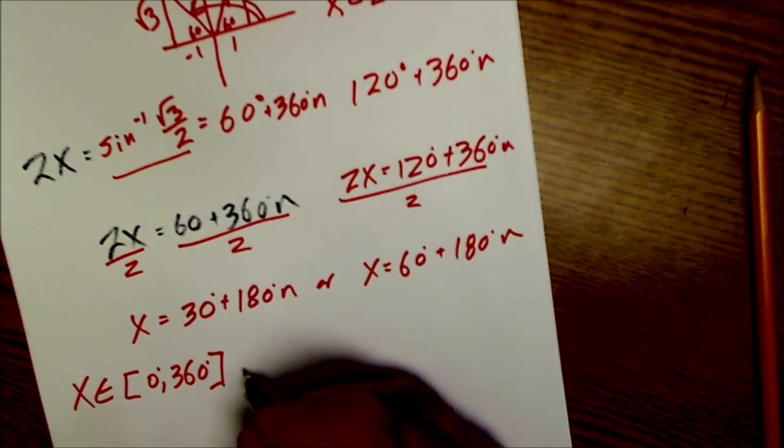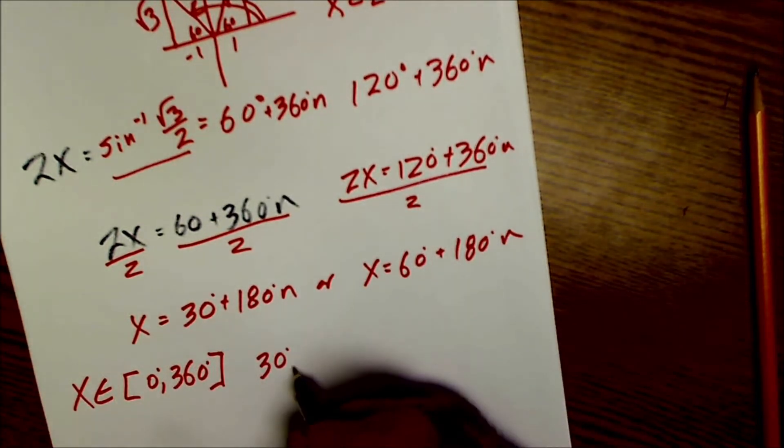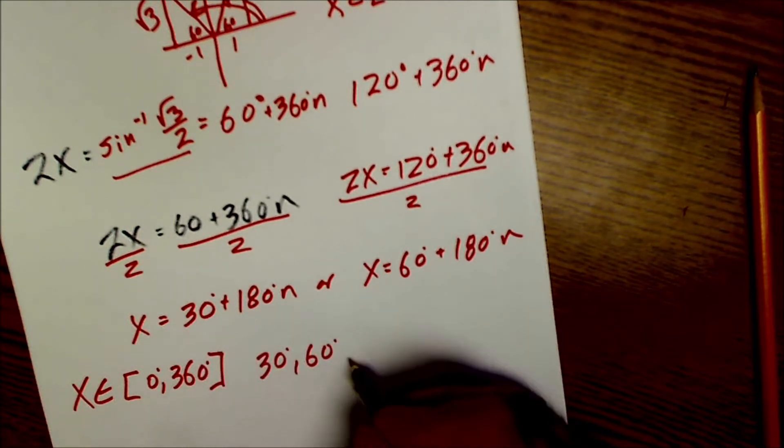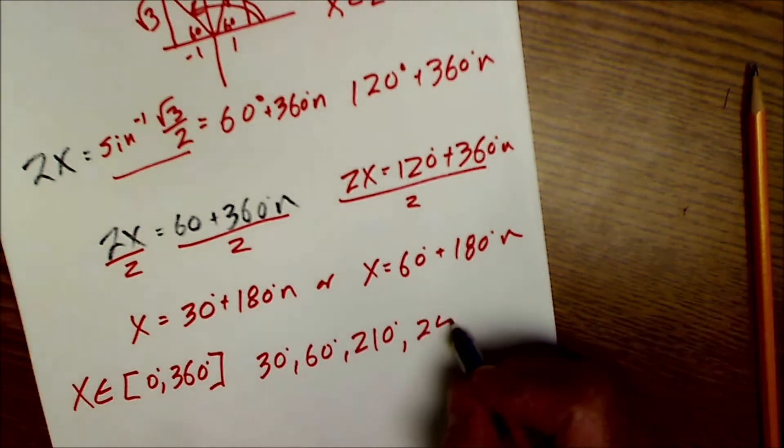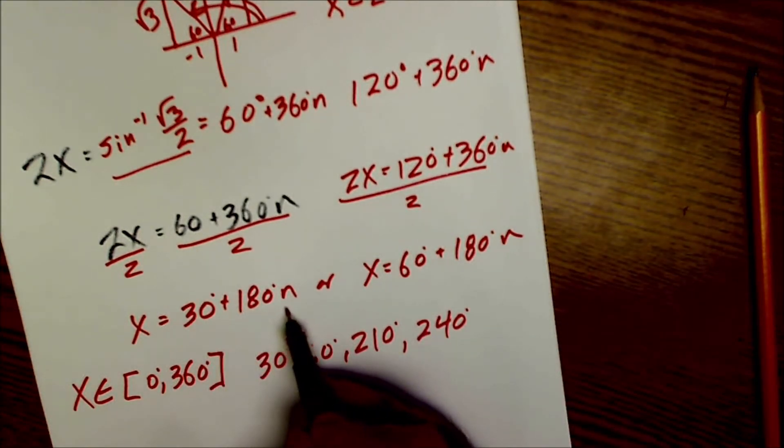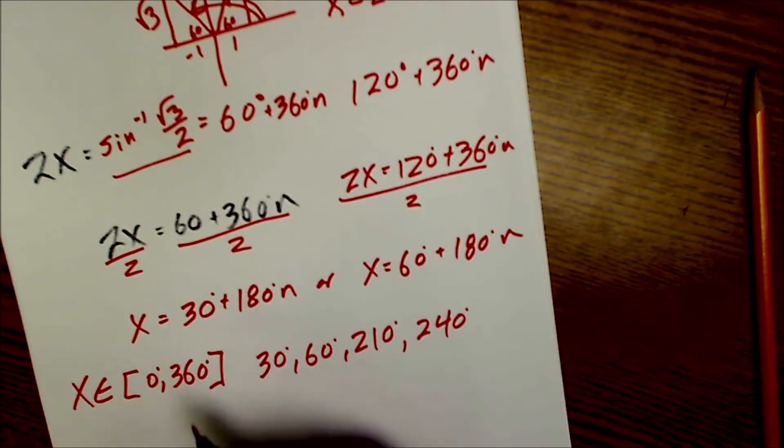then I would know that 30 would work, 60 would work, 30 plus 180, 210 would work, 60 plus 180, 240 would work. If n were 2, 360 plus 30 would be 390, outside of the domain, that would not work.